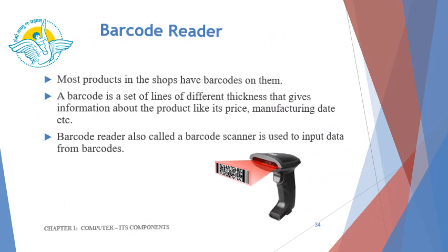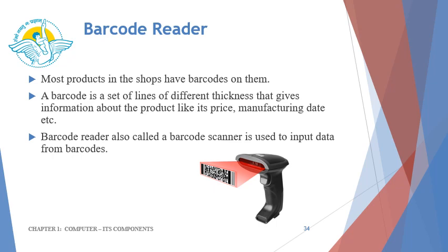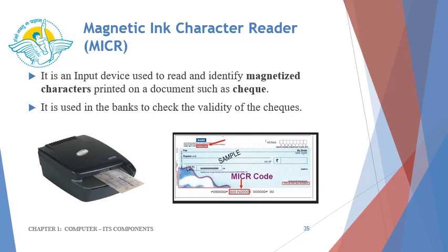Barcode reader — most products in shops have barcodes on them. A barcode is a set of lines of different thickness that gives information about the product like its price, manufacturing date, etc. The barcode reader, also called a barcode scanner, is used to input data from barcodes. Magnetic ink character reader, or MICR, is an input device used to read and identify magnetized characters printed on a document such as a check. It is used in banks to check the validity of checks. The check number at the bottom of the check is written with a special ink containing iron oxide particles, and this device checks the presence of those particles to verify the check's validity.